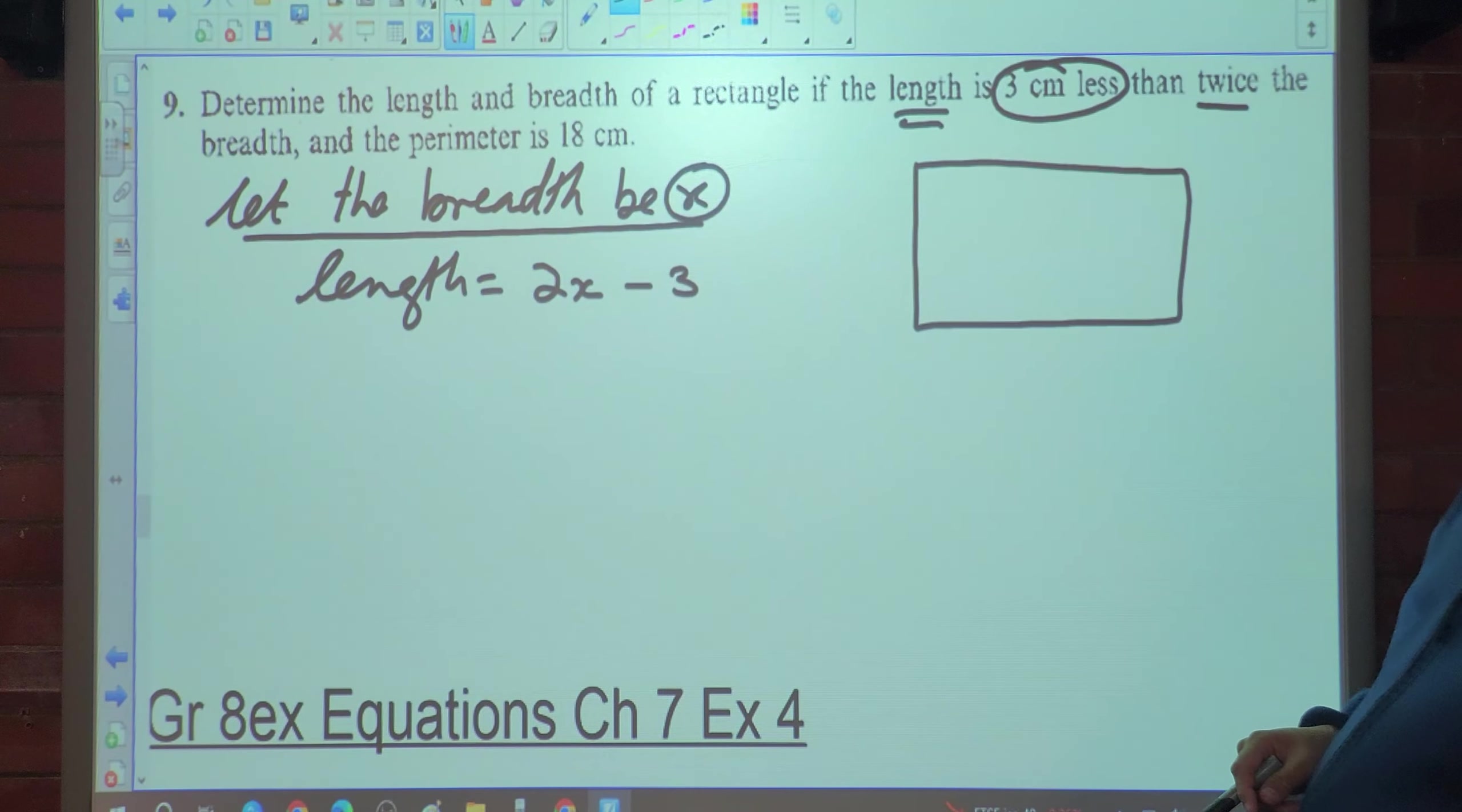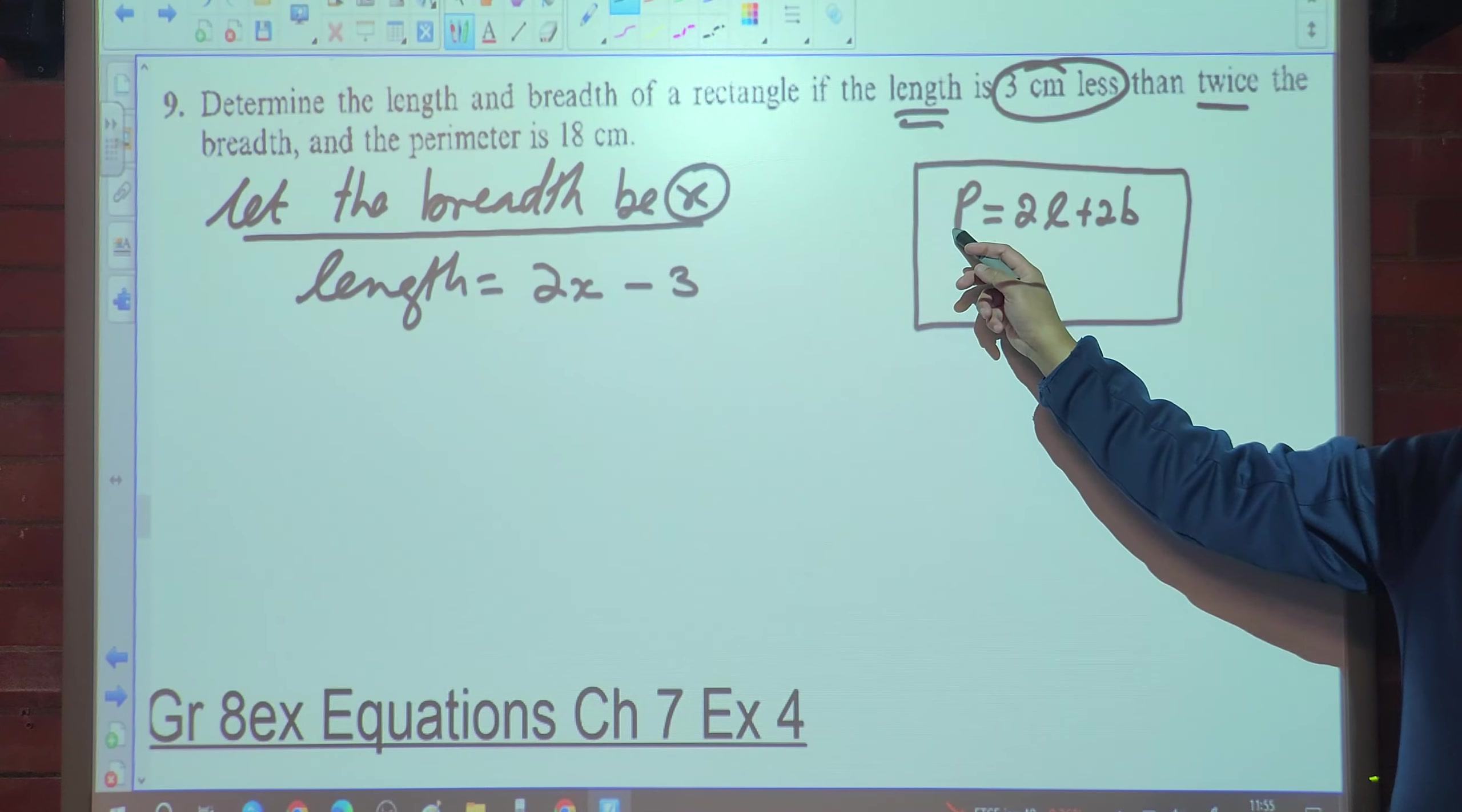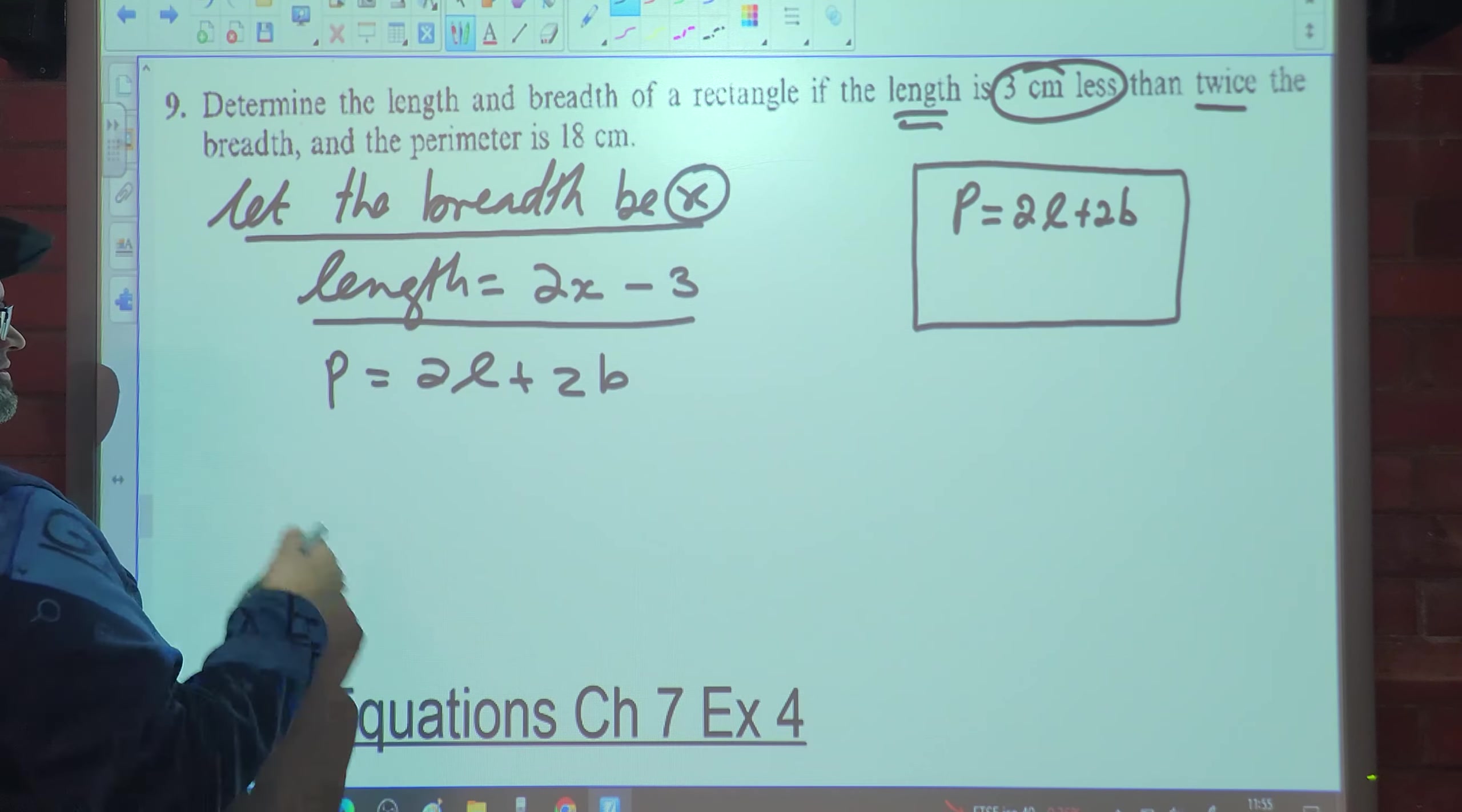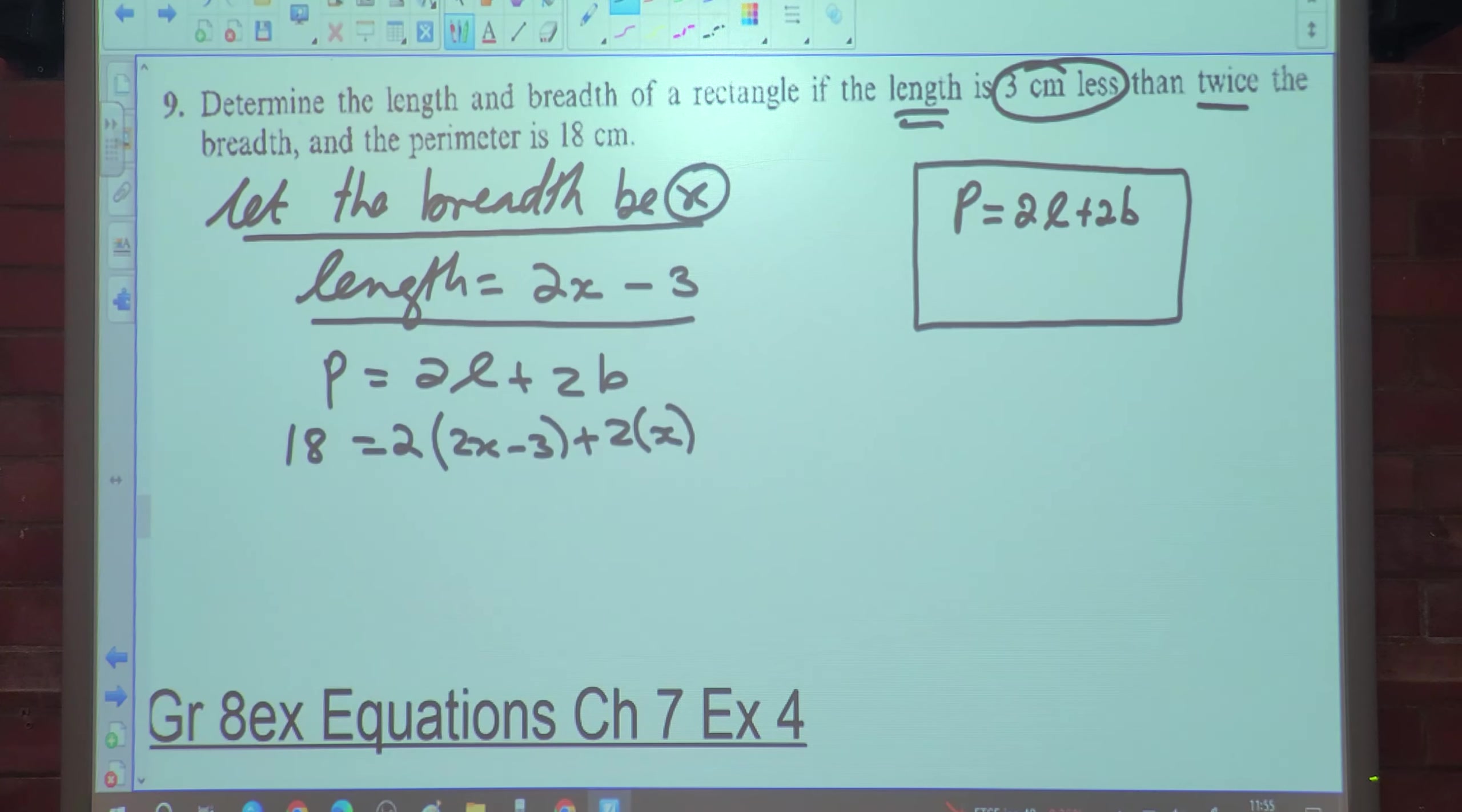The question says the perimeter is 18. How do we normally calculate the perimeter of a rectangle? The perimeter is going to be 2 length plus 2 breadth, but they have already calculated that to be 18. The formula is perimeter equals 2 length plus 2 breadth. So we say the perimeter is 18 is equal to 2 times length, 2x minus 3, plus 2 times the breadth which is x.